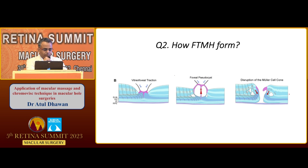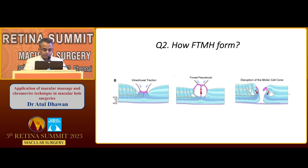How does the macular hole form? The macular hole forms when centrifugal forces increase and exceed the centripetal force. The macular hole formation is preceded by the foveal pseudocyst.